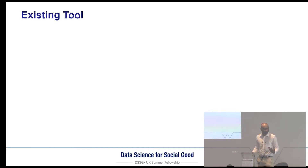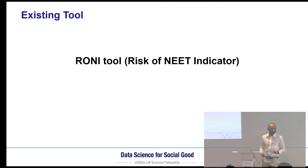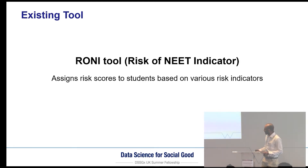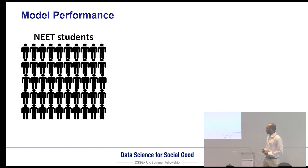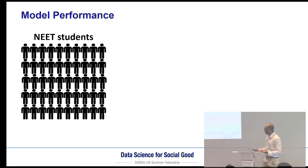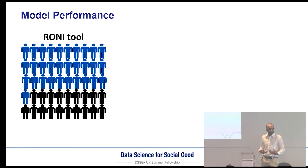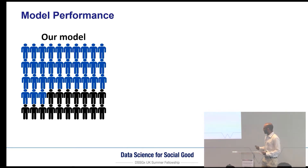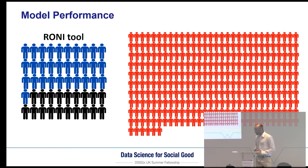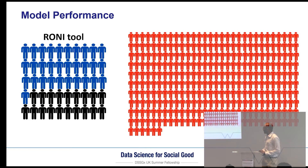Before we actually built our own model, we investigated other tools already in use. Manchester County uses the RONI tool, which is a simple scoring system that assigns weights to different risk factors and sums them up to measure a student's risk. In Buckinghamshire County, there are about 50 NEET students every year. The RONI tool would identify about 31 students before they became NEET. In contrast, the model that we built would identify a modest 33 students — a gain of about 2 students.